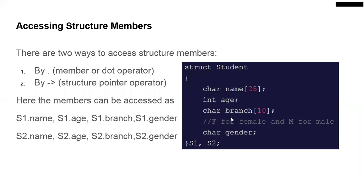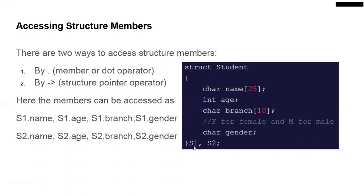To access members of a structure, you use the dot operator. For example, `s1.name`, `s1.age`, `s1.branch`, `s1.gender`. Similarly for s2: `s2.name`, `s2.age`, `s2.branch`. You can also use the arrow operator (`->`) for accessing members through pointers.